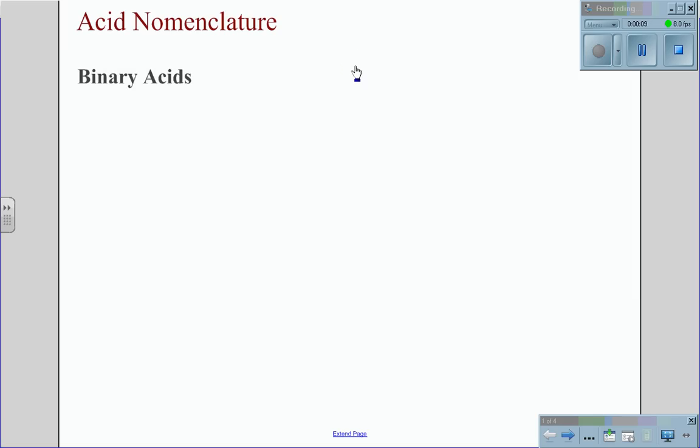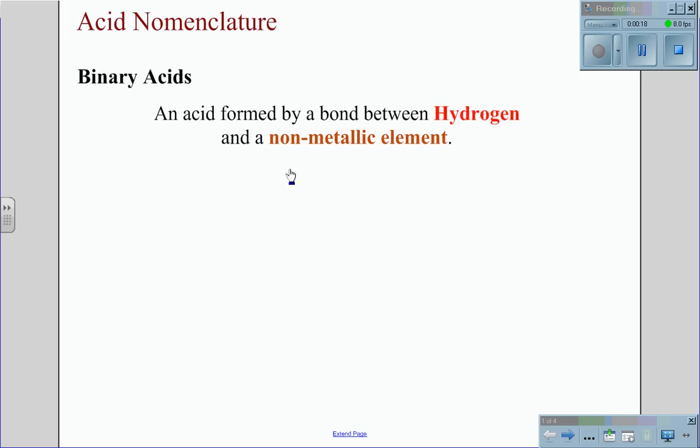A binary acid gets its name from the fact that it only has two elements. A binary acid is an acid formed by a bond between hydrogen and a non-metallic element.